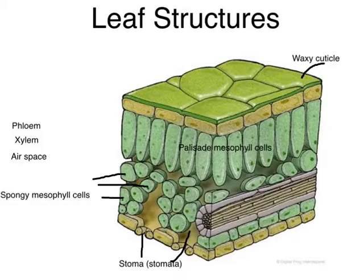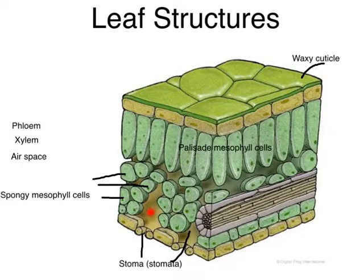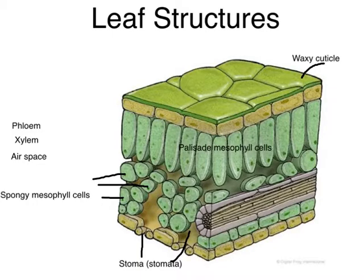Water would evaporate through those openings, and that's going to drive a process called transpiration. As water evaporates, more water is sucked in through the roots from the ground into the plant and eventually up to the leaves — so H2O is going out. The other thing going through those openings is the reactant for photosynthesis, which is CO2. You can't build sugars without carbon dioxide, so CO2 goes from the atmosphere into the air spaces. The stoma are openings that allow gas exchange between the leaf and the environment.